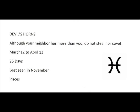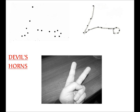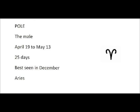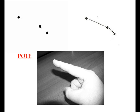Devil's horns. Although your neighbor has more than you, do not steal nor covet. March 12th to April 18th. Duration is 25 days. Best seen in November. Formerly known as Pisces. Hall. The male. April 19th to May 13th. Duration is 25 days. Best seen in December. Formerly known as Aries.